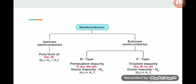When a small amount of pentavalent impurity is added to the intrinsic or pure semiconductor, it converts into n-type semiconductor. Example: pentavalent impurities like phosphorus.